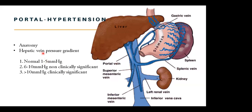The hepatic vein pressure gradient is usually measured by inserting a catheter via the hepatic vein. Normal pressures detected will be one to five millimeters of mercury. Six to ten will show non-clinically significant portal hypertension, and above ten will be clinically significant portal hypertension.